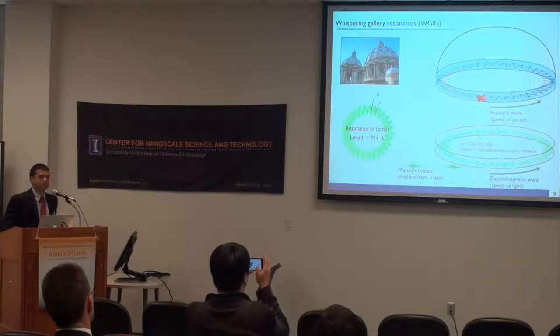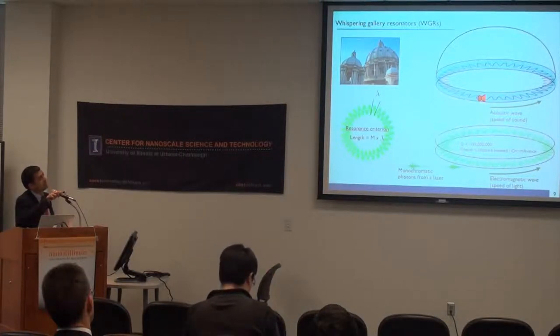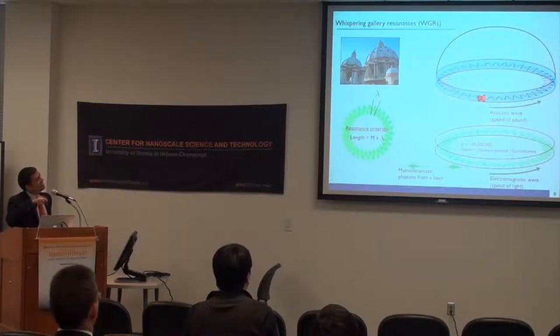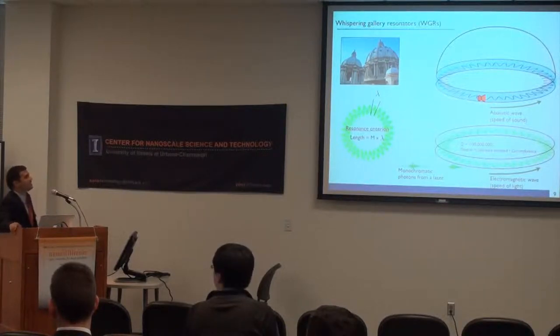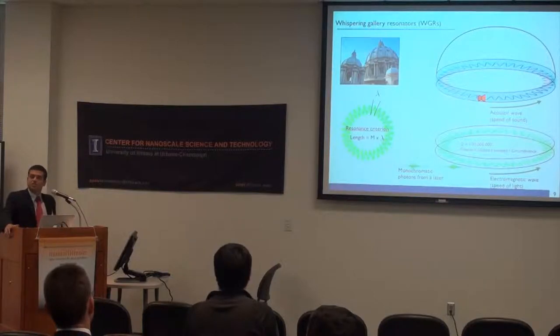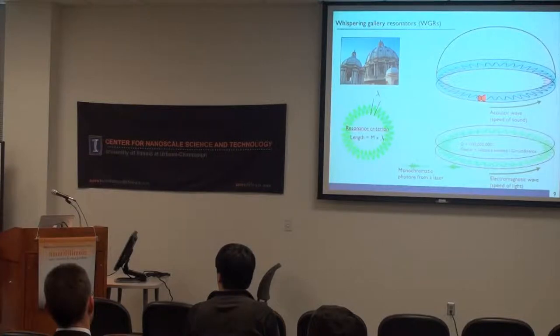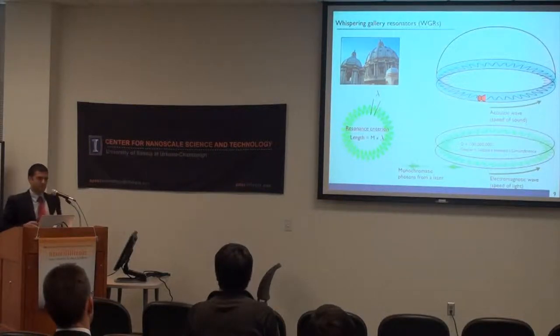What a whispering-gallery micro-resonator is, is a borrowed concept from acoustics, which was initially described by Rayleigh in these old European cathedrals. A whispering-gallery resonator is essentially a resonant chamber where any wave signal, like sound or light, can resonate. You can think of the resonance condition as a constructive interference condition, where the total path length of the resonator must be an integer multiple of the wavelengths. That's how these resonances occur.